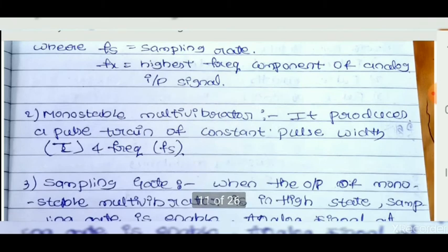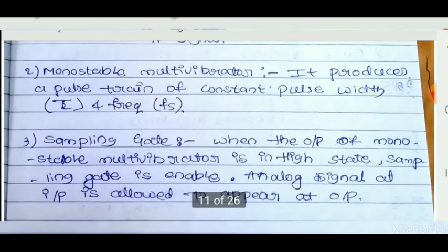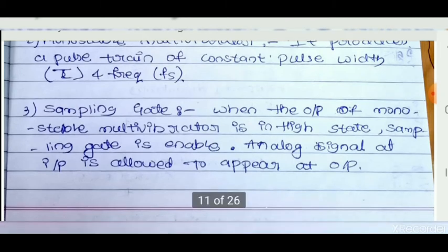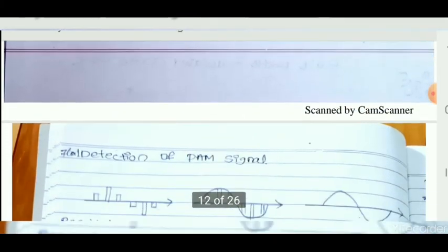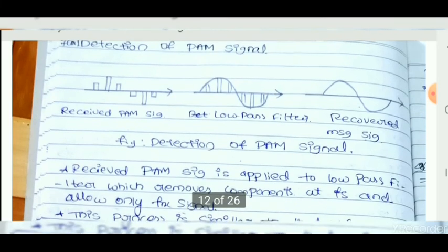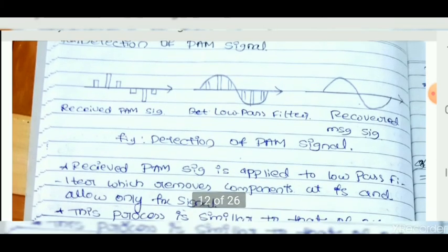The monostable multivibrator produces a pulse train of constant pulse width and frequency Fs. When the output of the monostable multivibrator is in a high state, the sampling gate is enabled and the analog signal at the input is allowed to appear at the output. Detection of the PAM signal is shown below: the received PAM signal is passed through a low-pass filter.